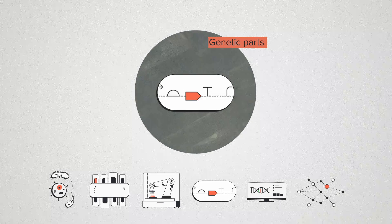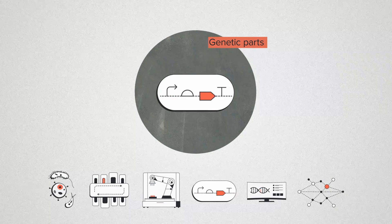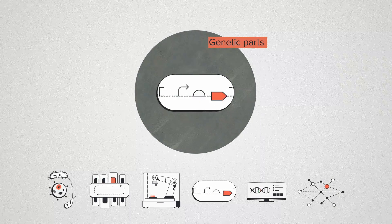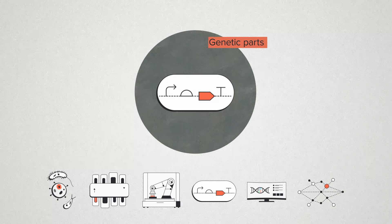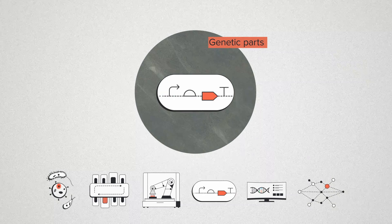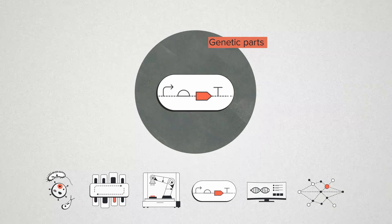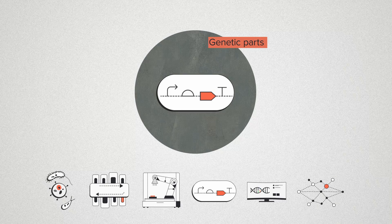Genetic parts are pieces of DNA that perform a commonly needed function. Usually these are not the core function of your DNA design, but the nuts and bolts that make it work. Think about strong promoters for making a lot of protein, or vectors for carrying DNA to the right place.